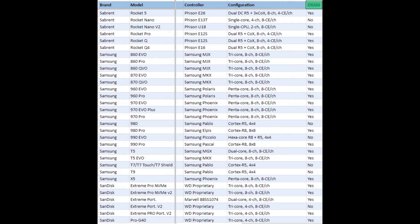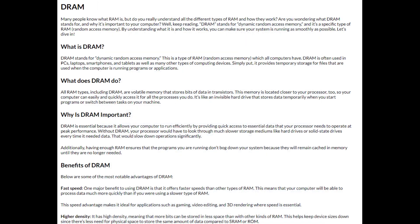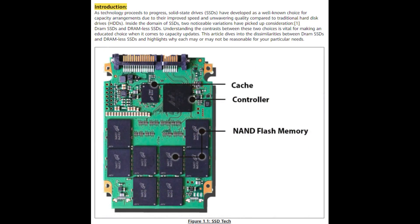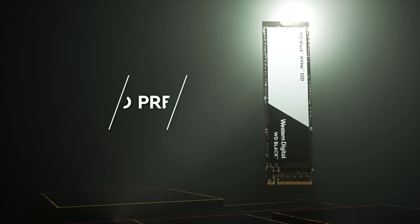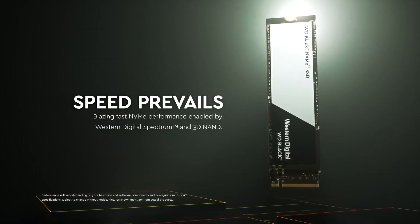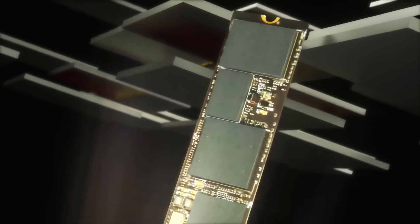What's up guys, Charles here. If you're looking for a new SSD, you may have seen the term DRAM — dynamic random access memory — being used by higher-end SSDs. DRAM, with its dynamic and volatile nature, greatly enhances the speed and efficiency of data retrieval and storage. Moreover, the presence or absence of a DRAM cache can be a crucial factor to consider when you're on the lookout for the best SSD for your PC.